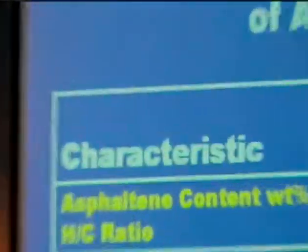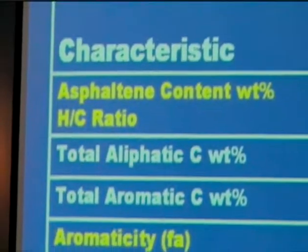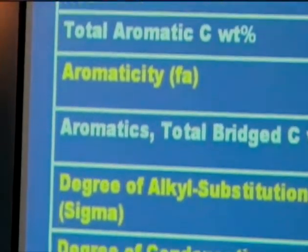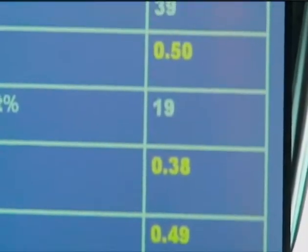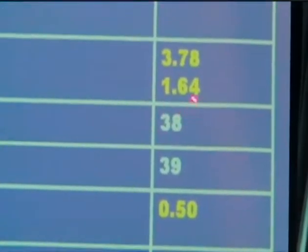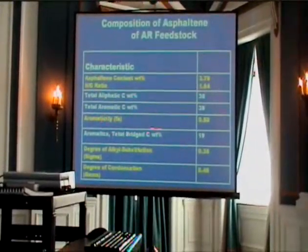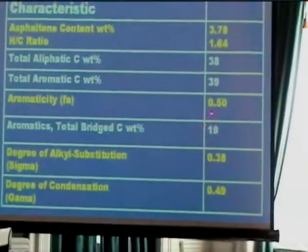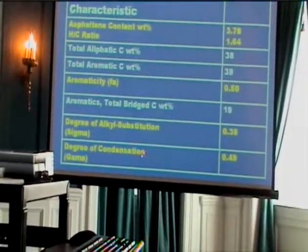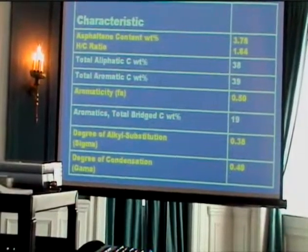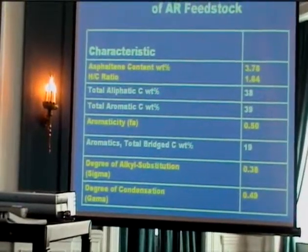The asphaltene obtained from Kuwait atmospheric residue was characterized to see its different properties: hydrogen-to-carbon ratio around 1.64, aromaticity around 2.5, degree of alkyl substitution around 1.38, and degree of condensation around 0.5. These are some of the important parameters obtained from NMR.